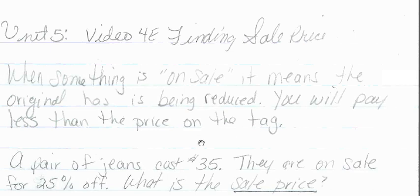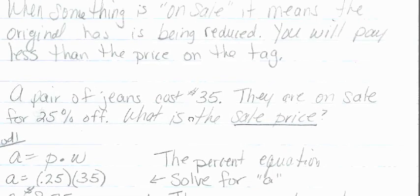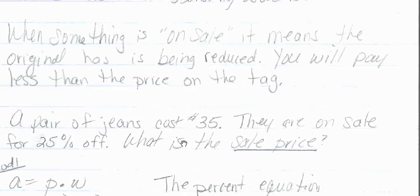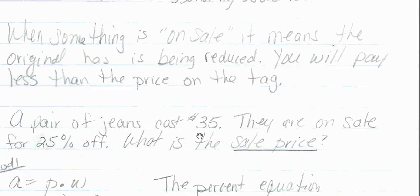Let's take a look at this example: a pair of jeans cost $35. They're on sale for 25% off. What is the sale price? Okay, so what I'm going to show you here is method one.